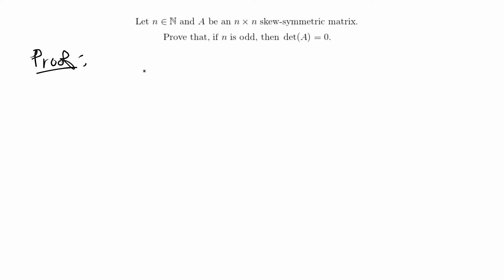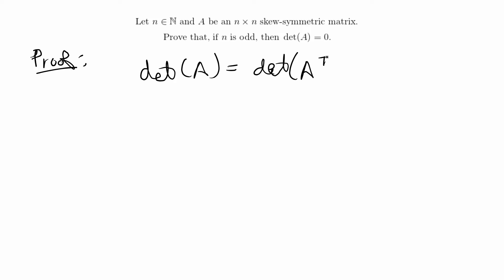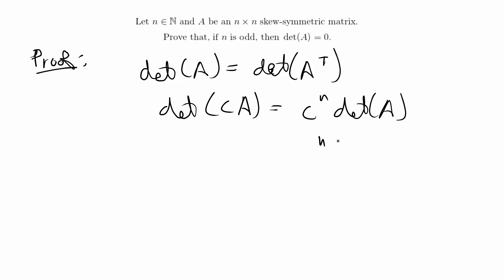This is a little bit similar to the last proof in that you have to know some basic determinant properties, and again we have to know what a skew symmetric matrix is. The basic determinant properties you'll use are: the determinant of A always equals the determinant of the transpose of A for any n by n matrix, and also that the determinant of cA equals c to the n times the determinant of A, where n is the size of the matrix.